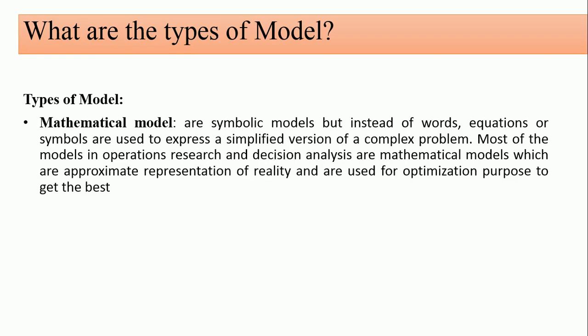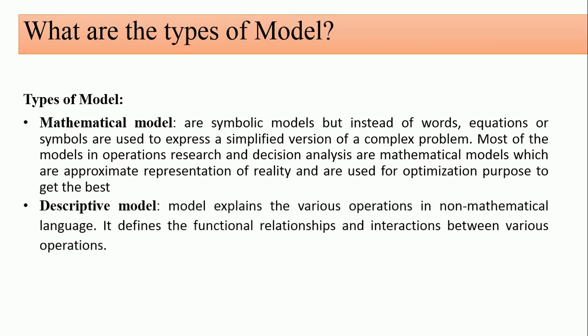Now, what are the types of models? The first type is the mathematical model. Mathematical models are symbolic models that use equations and symbols to express a simplified version of a complex problem — we use equations, not words. Most models in operations research and decision analysis are mathematical models, used to get the best optimum solution — such as linear programming, transportation, and assignment models.